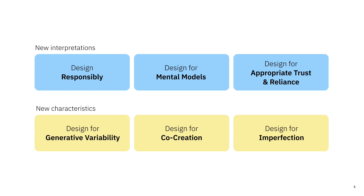Here's our answer for how to address all of these challenges posed by generative AI. This is our framework for the design of generative AI applications, and it consists of six design principles. Three of these principles — the ones in blue — should be familiar because we've seen them come up before in the design of AI systems, but we have new interpretations of them when viewed through the lens of generative AI. The other three principles in yellow are completely new and identify some of the unique characteristics of generative AI. Each principle is coupled with a set of four specific design strategies that practitioners can use to implement them.